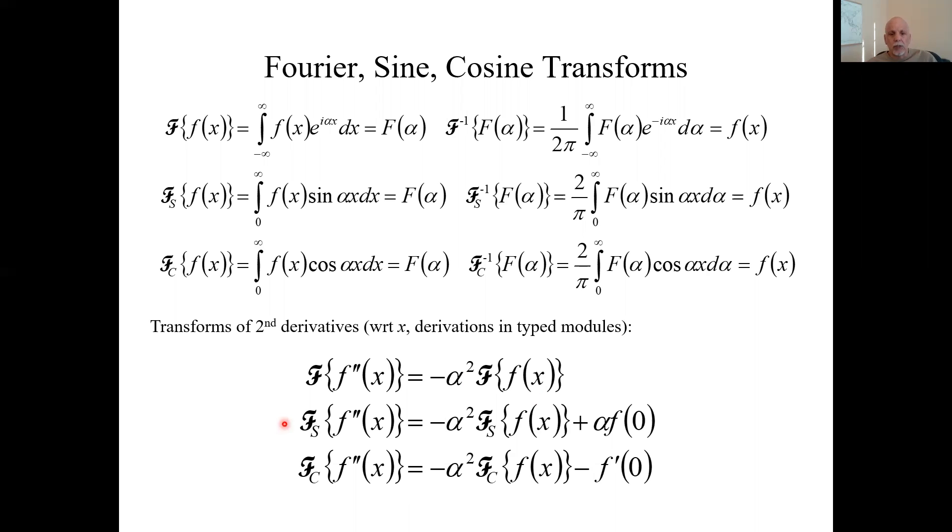If you did similar things for the sine transform, the second derivative, it would be this. It's still multiplied by minus alpha squared, but you tack on this initial condition. Similarly, for the cosine transform. So we have these transforms of a second derivative. And we're going to use all this to solve certain partial differential equations.